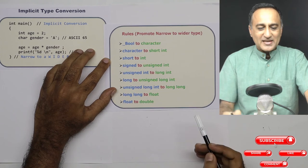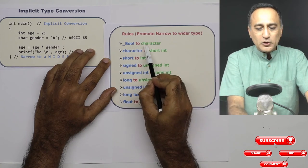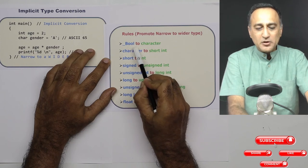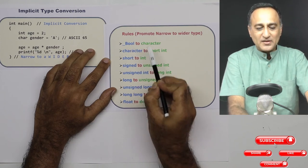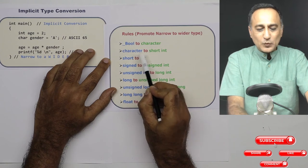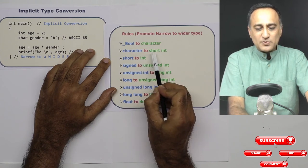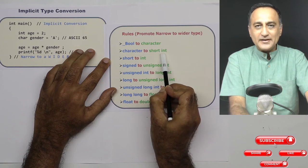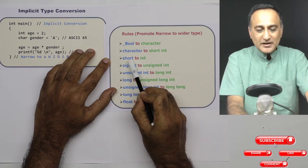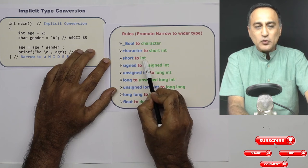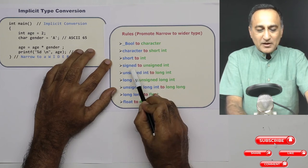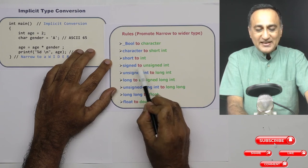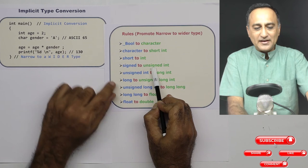So let's take an example. Suppose I'm adding bool to a character or I'm multiplying bool with a character. In this case what happens is bool is promoted to a character. If I'm multiplying a character with an int, then character is promoted to short int assuming I'm multiplying character with short int. If I'm multiplying short int with int, short is promoted to int. If I'm multiplying a signed int with an unsigned int, signed int is promoted to an unsigned int.